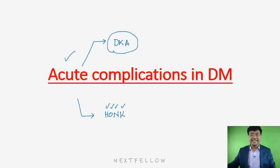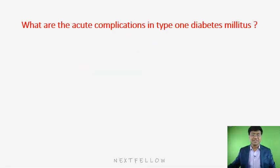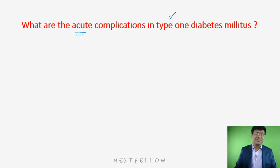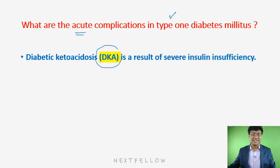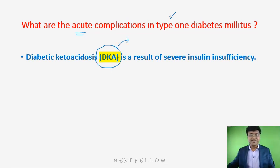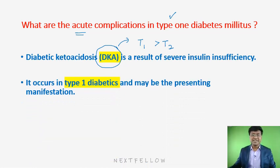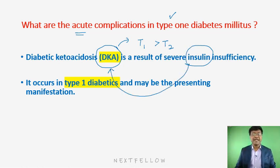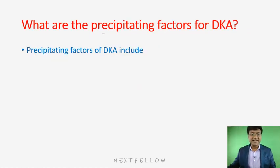Let me discuss diabetic ketosis. The acute complication in type 1 diabetes mellitus is diabetic ketosis, though it is also seen in type 2 diabetes mellitus. It is more common in type 1 diabetes mellitus, and is due to severe insulin deficiency leading to the development of DKA.